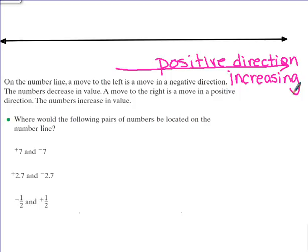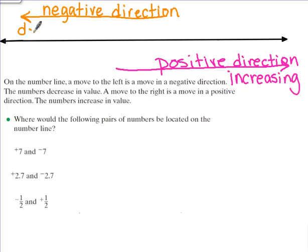You should be copying this into your C notes now. Okay, when we move to the left on a number line we say that we're moving in a negative direction, and when we move in a negative direction our numbers are decreasing—they're getting smaller.